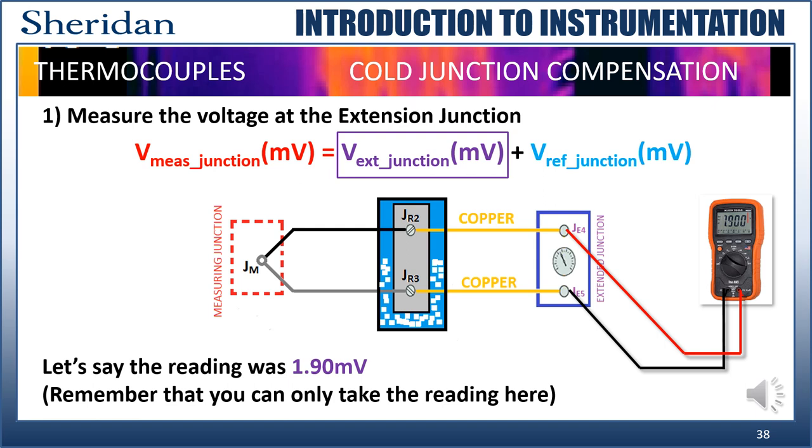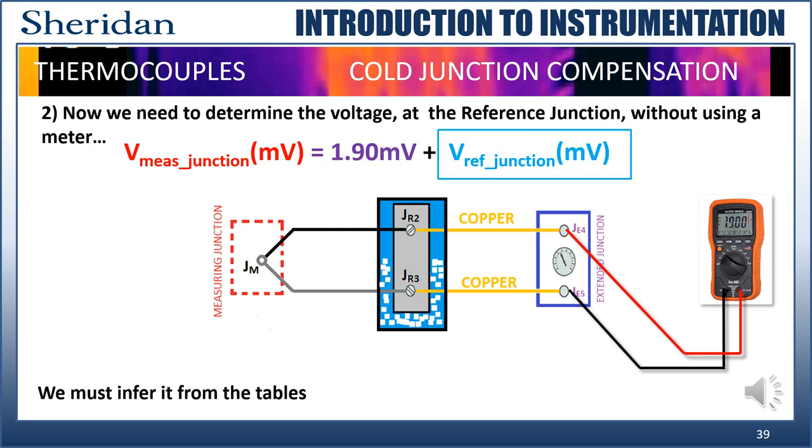The first thing we're going to do is we're going to take a reading at the extension junction. Let's say it was 1.9 millivolts. Remember, we can only take readings from the extension junction. So we plug 1.9 millivolts into our equation. Now, we have to measure the voltage at the reference junction. Oh, now that's going to be a problem. Because now, we have to somehow measure the voltage without a meter. What, is it going to be a Houdini trick? Well, not a Houdini trick, a universal trick, just like looking up the ampacity of a 4-odd aluminum wire.